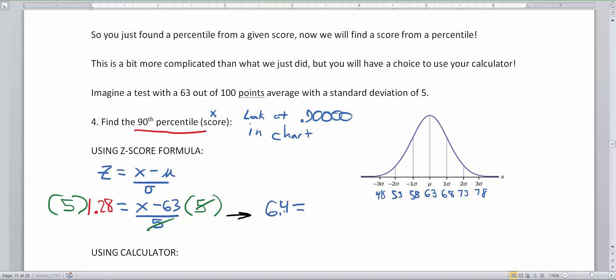And that's equal to what's left on the right-hand side of this equation, x minus 63. I'm going to add 63 to both sides, add 63 to both sides, and here's what we have. x is equal to 6.4 plus 63, which is 69.4.